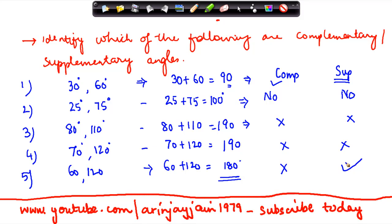So in order to identify whether two angles are complementary or supplementary, find the sum of the two angles. If the sum is 90°, the angles are complementary. If the sum is 180°, they are supplementary. If neither, then they are neither complementary nor supplementary.